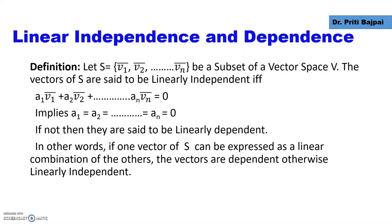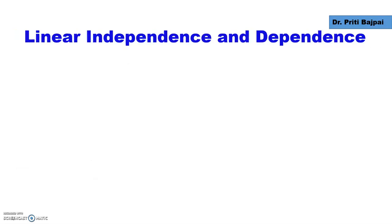What does it mean intuitively? For a layman, it means if the vectors are linearly independent, then one vector from the subset S cannot be expressed as a linear combination of other vectors in S. But if they are dependent, then we can do so.